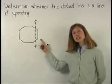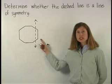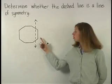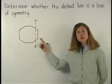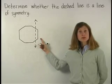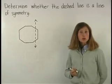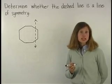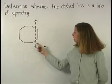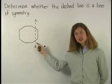So to determine whether this line is a line of symmetry, we need to determine whether it divides the figure into two parts such that each part is a mirror image of the other. In other words, if we flip one side of the figure over the line, will it match up with the other side?